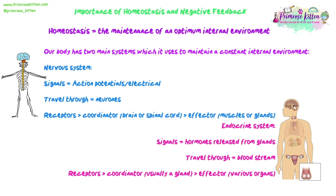We've looked at one of the main systems the body uses to help maintain this internal environment: the nervous system. It sends signals through action potentials — electrical signals which travel through neurons. The system works so that we have receptors, they send messages through neurons to a coordinator, your brain or spinal cord, and then that message gets sent to your effector, which is muscles or glands, which bring about the change.